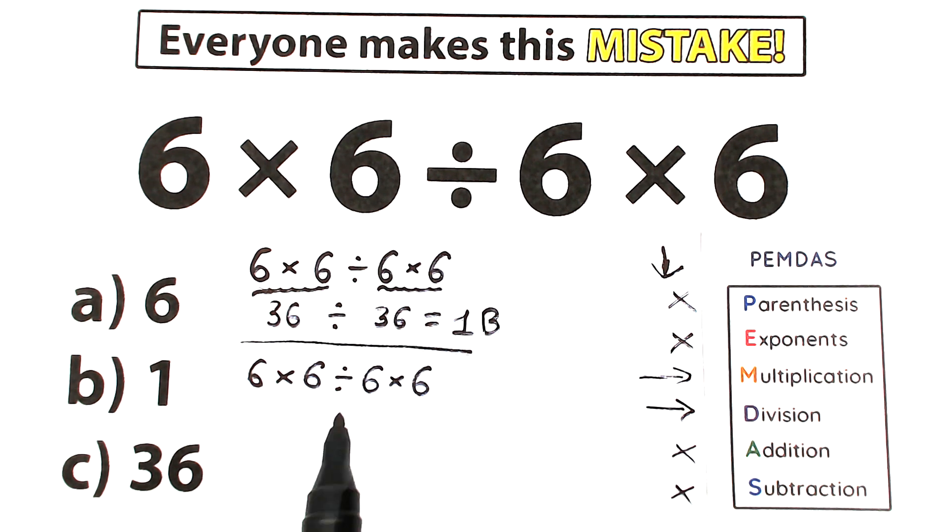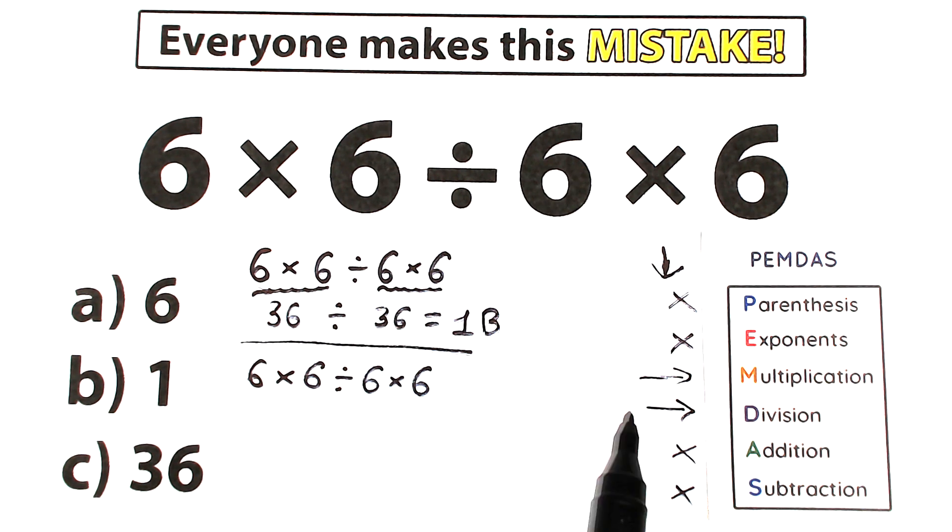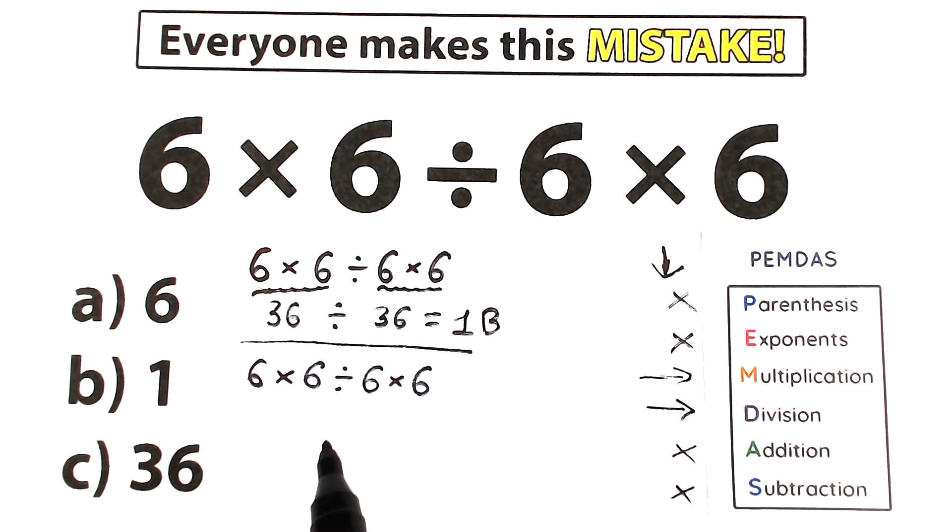What is the correct order to do this problem? Multiplication first, then division, or division first, then multiplication? Here is the main thing. And according to PEMDAS, the correct order is a strict order from left to right. In which we should scan what is the first sign from left to right. Multiplication or division.